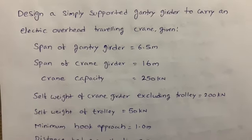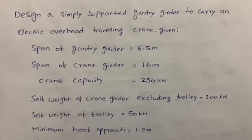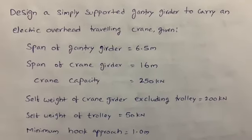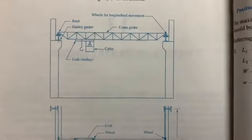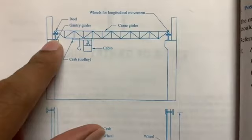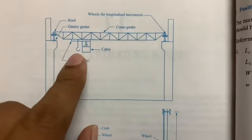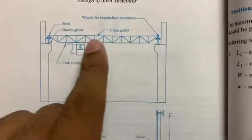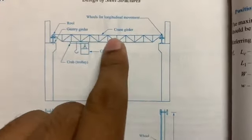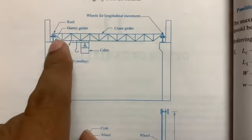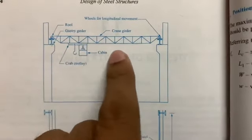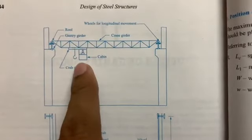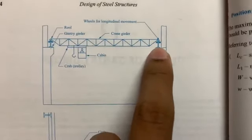In this video I'm going to explain about gantry girder design in the design of steel structures. This is the gantry girder — the cabin is here, this is the hook portion, and this is the crane girder. The crane girder acts on the gantry girder; there are wheels so it can move to carry loads. Now we are going to design these gantry girders.